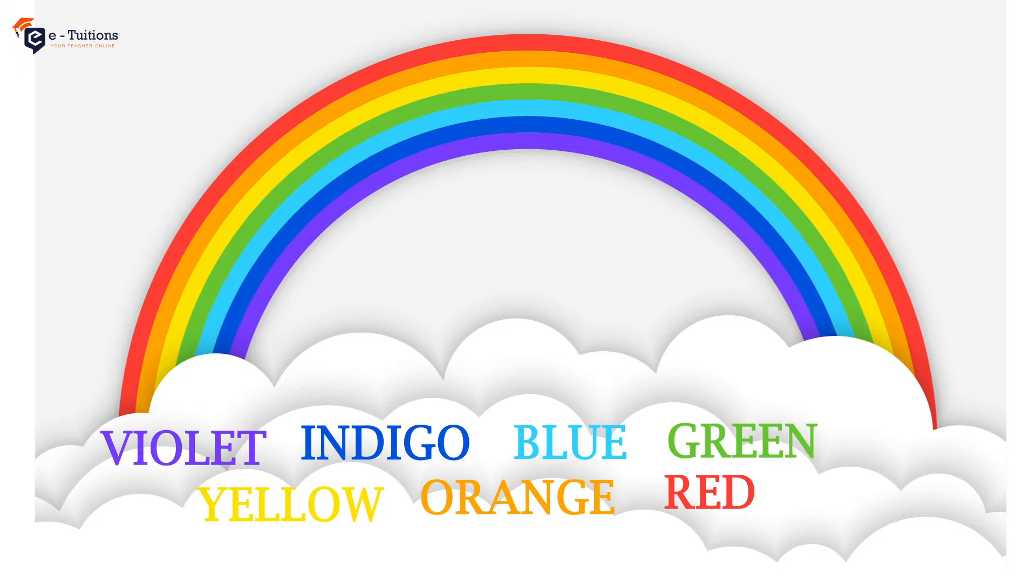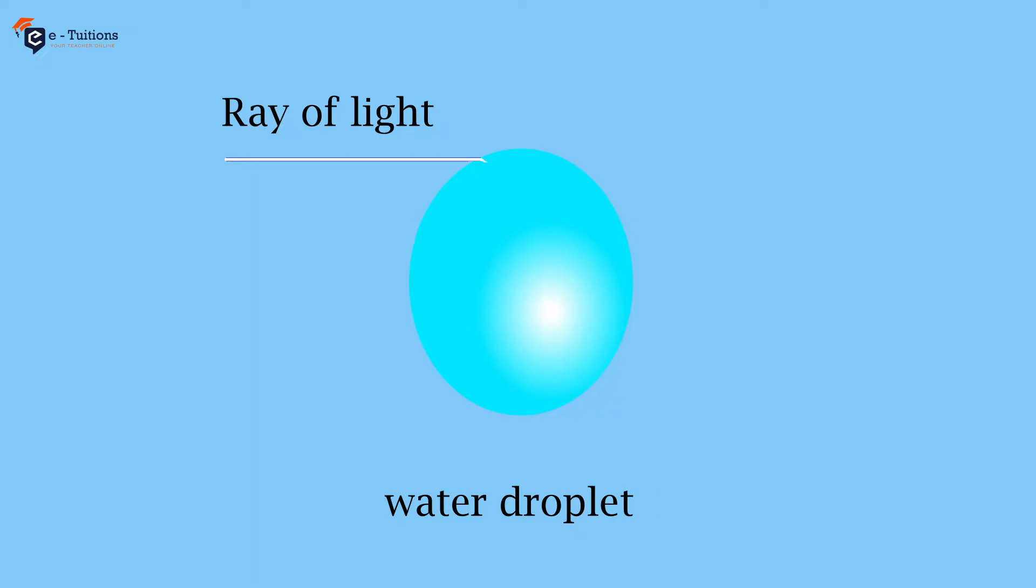That is why we call it VIBGYOR. As the sunlight passes into the rain droplets, the droplets act as a prism. The light bends and slows down because light travels slower in water than in air.